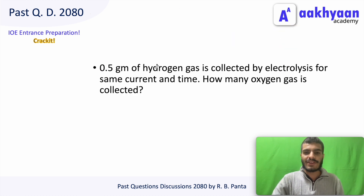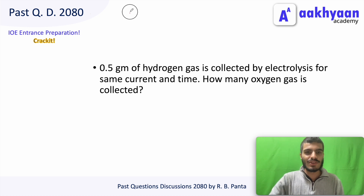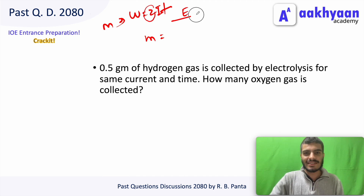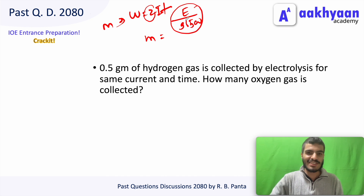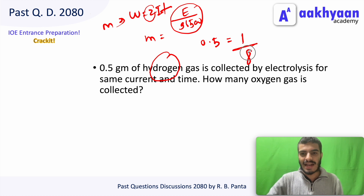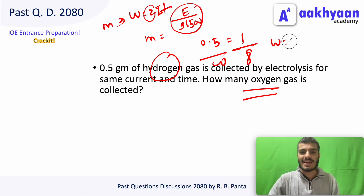For hydrogen: 0.5 grams of hydrogen gas is collected by electrolysis. Using W = ZIt and the equivalent weight / 96500 formula. With mass = 0.5 g for hydrogen, the equivalent weight of oxygen is 8, so weight of oxygen deposited = 4 grams.